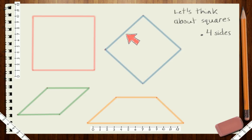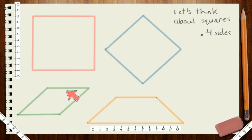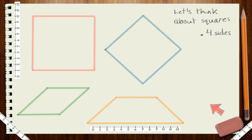The blue one: one, two, three, four sides — it could be a square. The green one: one, two, three, four — it could be a square. The orange one: one, two, three, four sides — it could be a square too. I don't know that that makes much sense because I don't know that they're all squares. What else do we know about squares that can help us figure out which ones are and are not squares?